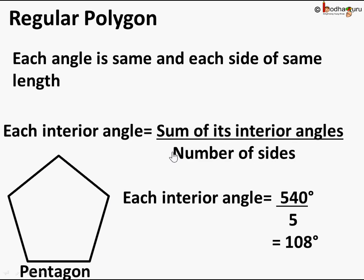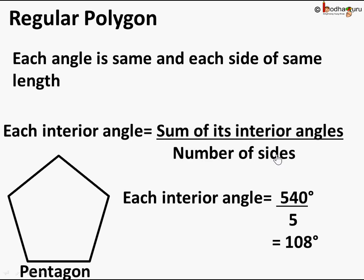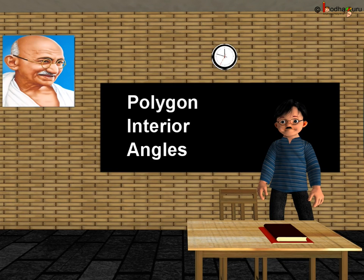In this lesson we learned how to find the sum of interior angles of a polygon. If there are n sides, the sum is (n − 2) × 180 degrees. For a regular polygon, each interior angle equals the sum of interior angles divided by the number of sides. That's all for this lesson, children.